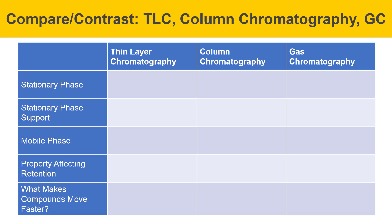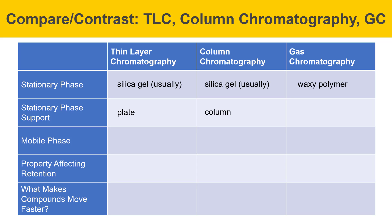On this slide, we're going to compare and contrast TLC, column chromatography, and GC. The first thing we'll talk about is stationary phase. In thin layer chromatography, it's usually silica gel, as it is in column chromatography, and in gas chromatography, it's a waxy polymer. The stationary phase support in TLC is a plate. In column chromatography, it's a column, and in gas chromatography, it's a thin tube. The tube in gas chromatography is very thin — about 0.25 millimeters, about the thickness of a human hair.